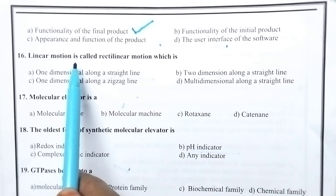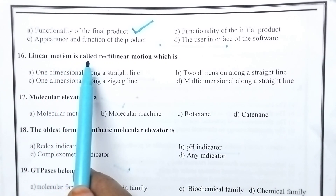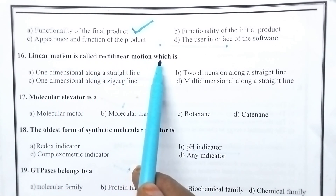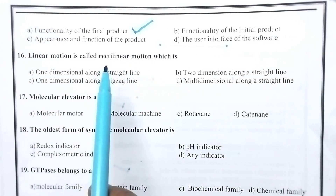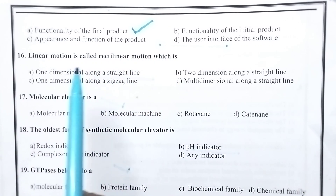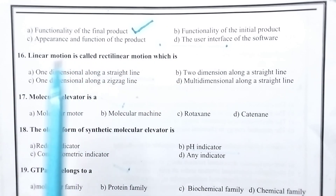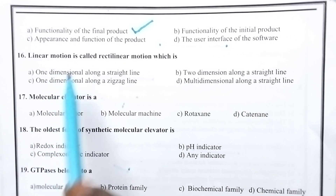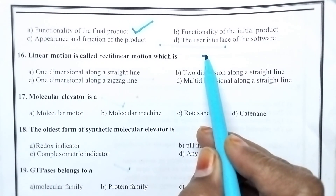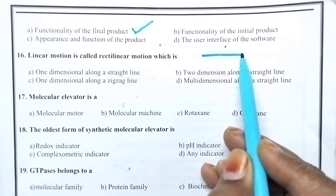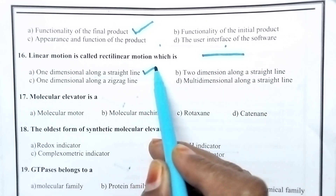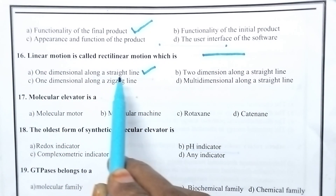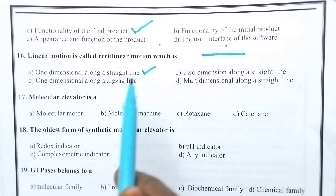Linear motion is called rectory linear motion, which is — in the case of rotaxins, they exhibit linear motion. Remember, linear motion is one-dimensional along a straight line. So option A, that is one-dimensional along a straight line, is the right option.